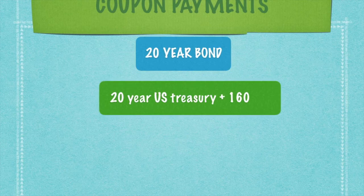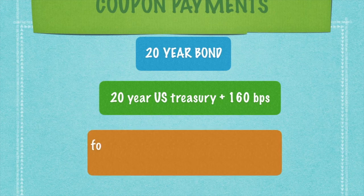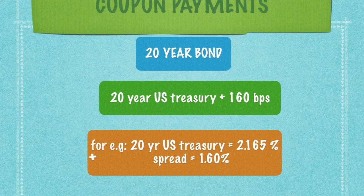For the 20-year bond, the coupon is the 20-year US Treasury plus 160 basis points. As you can see, for the 10-year bond issuance the margin was 120 basis points, but as the term increases the margin also increases — now standing at 160 basis points for the 20-year. For example, if the 20-year US Treasury is 2.165%, adding the spread of 1.6% gives the coupon payment RIL will pay on its 20-year bond issuance, paid semi-annually.